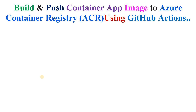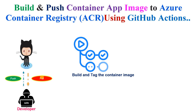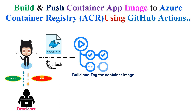In this video I'm going to show you how to build and push a container app image to Azure Container Registry using GitHub Actions. Say you have a developer working on a container app application whose source code is hosted on GitHub. You want to use GitHub Actions to wrap that source code as a container image and push that image into Azure Container Registry. We're going to use an example Flask application for this demo.